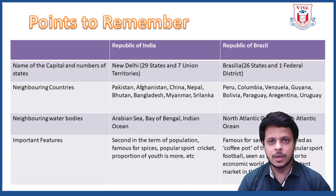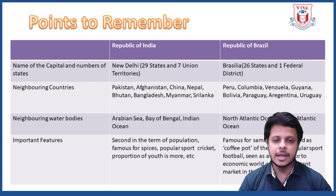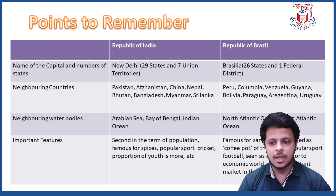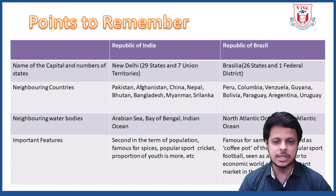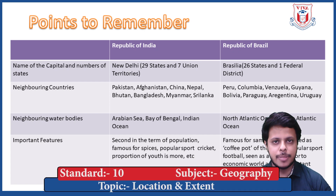Let's understand the points to remember. India, also called the Republic of India, has its capital at New Delhi. The book lists 29 states and 7 union territories, but currently India has 28 states and 8 union territories. Brazil, also called the Republic of Brazil, has its capital at Brasilia and has 26 states and 1 federal district. Neighboring countries to India are Pakistan, Afghanistan, China, Nepal, Bhutan, Bangladesh, Myanmar, and Sri Lanka. Neighboring countries to Brazil are Peru, Colombia, Venezuela, Guyana, Bolivia, Paraguay, Argentina, and Uruguay. The neighboring water bodies to India are the Arabian Sea, Bay of Bengal, and Indian Ocean. Brazil is surrounded by the North Atlantic Ocean and the South Atlantic Ocean.